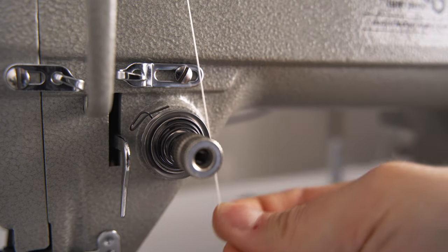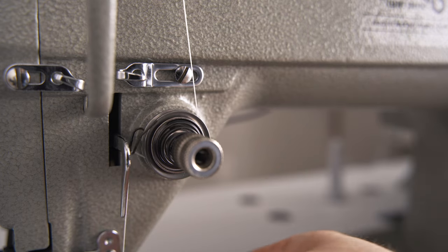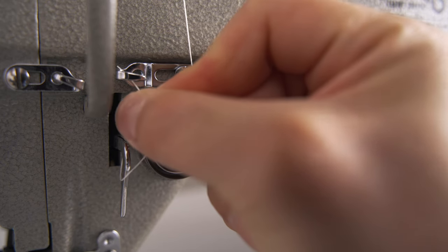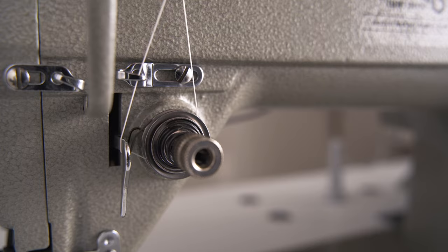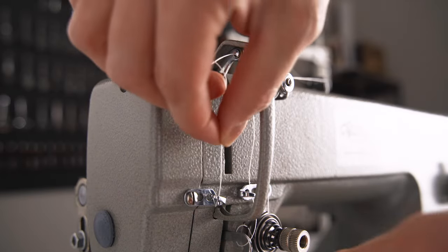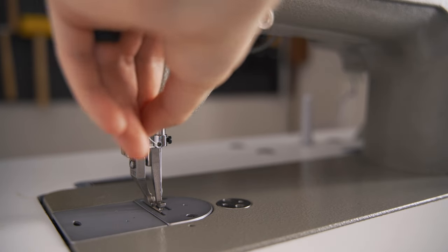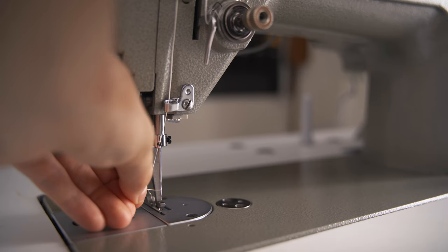Pull the thread down between the second set of tensioner disks clockwise. Pull the thread up through the thread guide loop, under the hook, and up through the next guide. Bring the thread up and through the take-up arm, then back down through the next guide. Pull the thread down through the lower guide, then through the needle guide, and finally through the needle eye towards the machine.